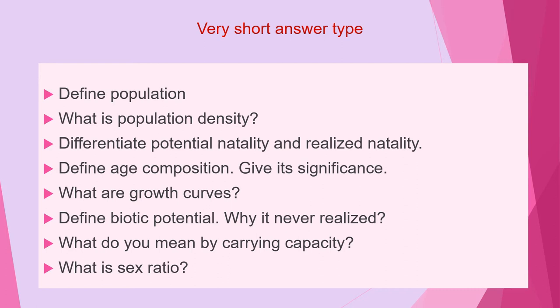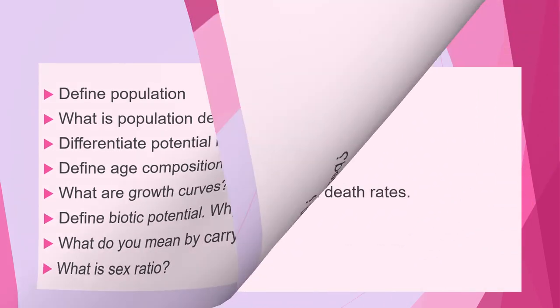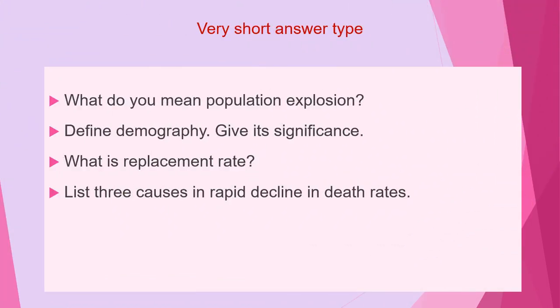Next question is: what is sex ratio? Next is: what do you mean by population explosion? Next question is: define demography and give its significance. Next question is: what is replacement rate? And the last question of this category is: list three causes of rapid decline in death rates.